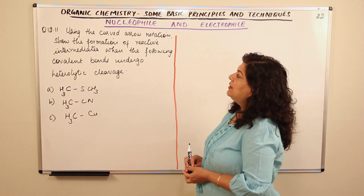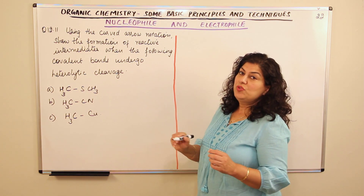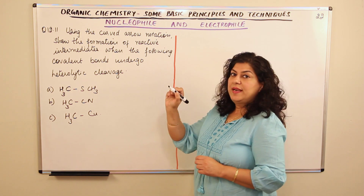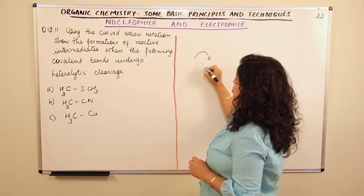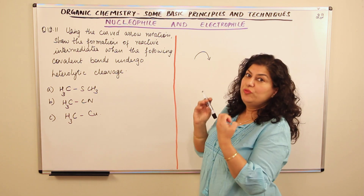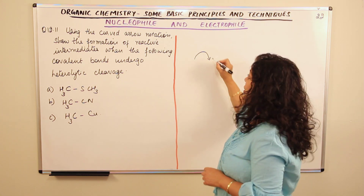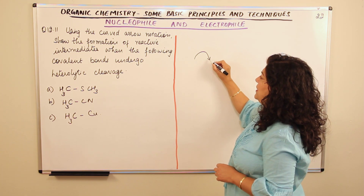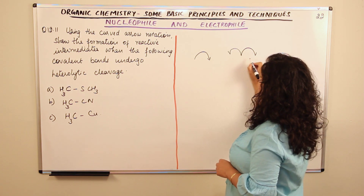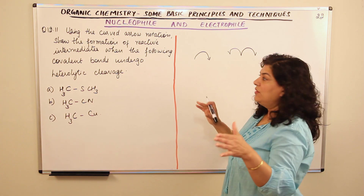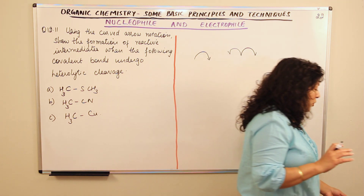The question reads: using the curved arrow notation — whenever we discuss the movement of electrons, we use a curved arrow where the head shows the direction of electron movement and the tail shows where the electrons came from. A double-headed arrow represents two electrons; two half-arrows (fish hook arrows) show the movement of one electron each.